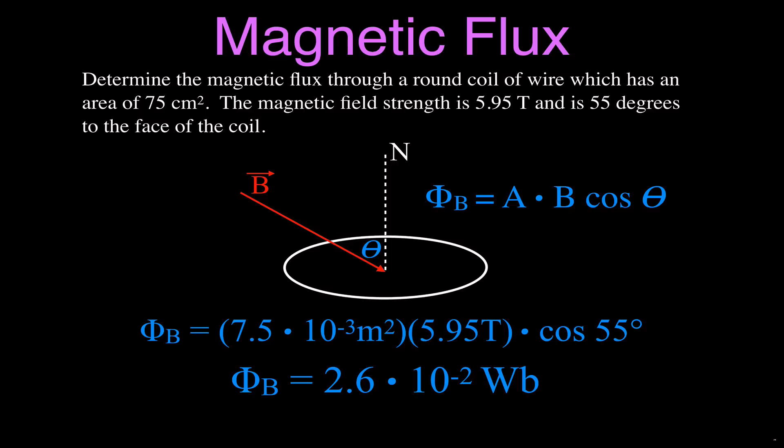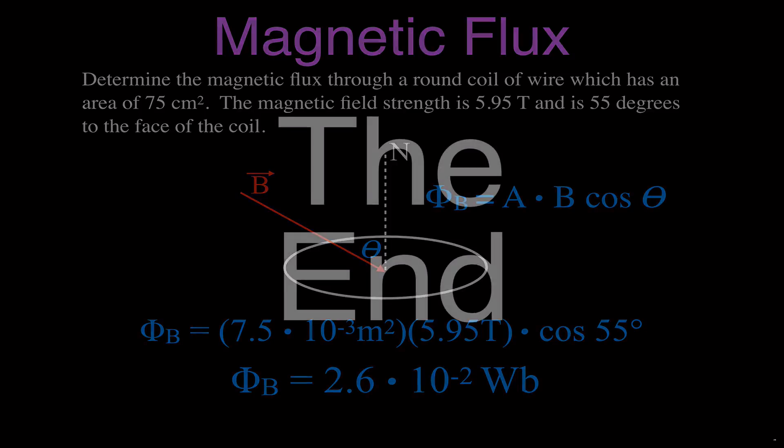That is magnetic flux — area, magnetic field strength, and the angle theta — with some worked examples. Thank you very much for watching. If you found that video helpful, please subscribe to my channel for physics, chemistry, and math videos, give a thumbs up, leave a positive comment below, and share this video with your friends. We'll see you in the next video.